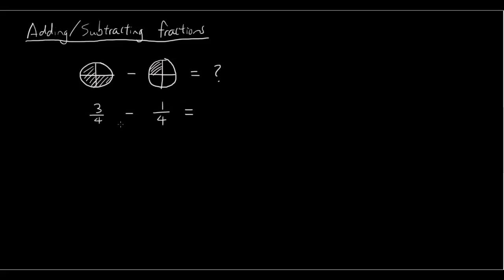Adding or subtracting fractions is pretty easy when you have the same denominator. You can see these two numbers are the same, so when you are adding or subtracting fractions with the same denominator, all you do is keep the denominator the same — the bottom of the fraction is still 4 — and you just subtract the numbers at the top. So three minus one is two, and if you remember how to simplify fractions, we can divide both numbers by two and we get one out of two. So that's the answer.